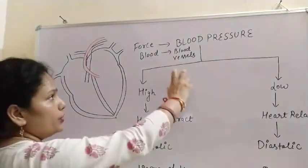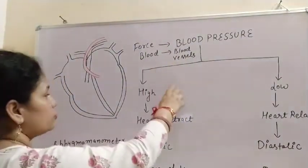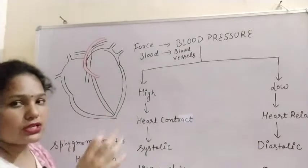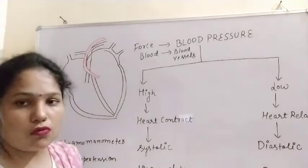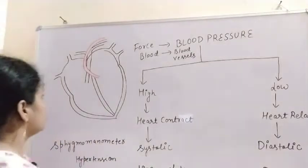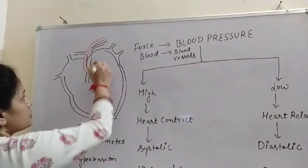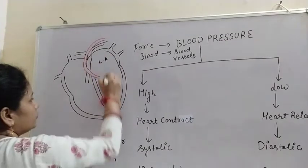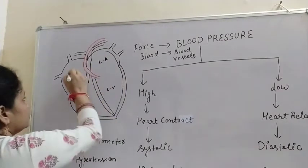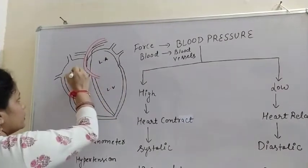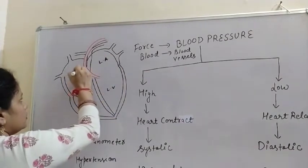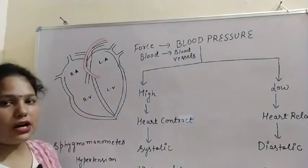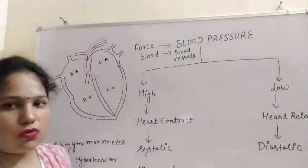So to understand this topic, you have to just recall the structure of the heart and especially the working of the heart. So here, this is the left auricle, left ventricle, right auricle and right ventricle. Because in the heart, there are four chambers.